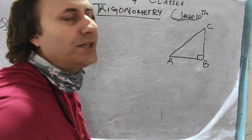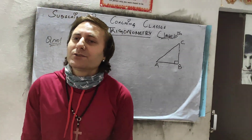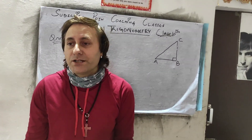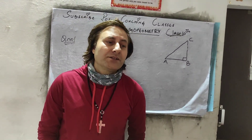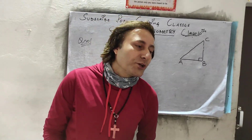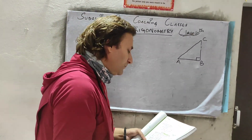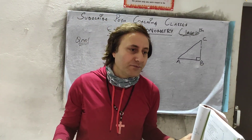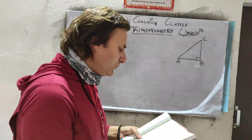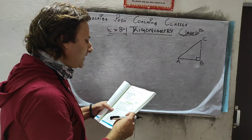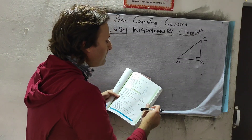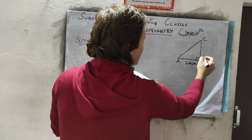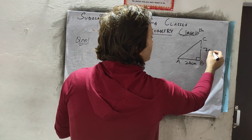One thing you need to make sure in trigonometry is there has to be a right angle triangle — if we don't have a right angle triangle, we cannot use trigonometry. The question says: right angle at B, AB is 24 cm, BC is 7 cm.